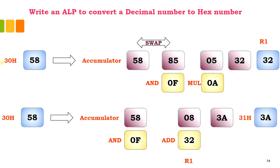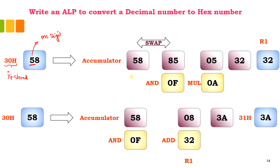My input is stored at location 30H and the input I have considered is 58. Initially, I am going to move it to the accumulator. I am going to perform the swap operation so that the nibbles are interchanged — 58 will become 85. This will be masked to obtain only the lower nibble; basically I want only the MS digit, and that is 05.